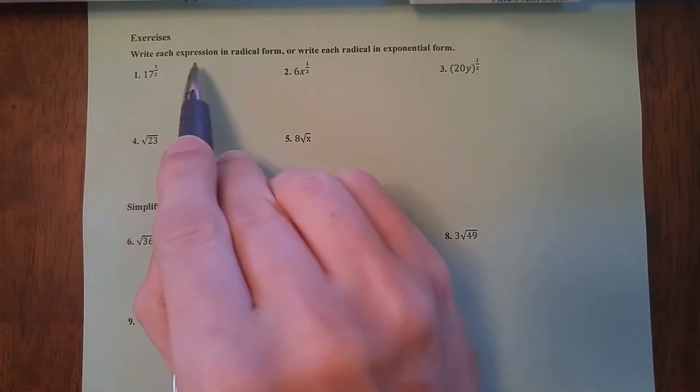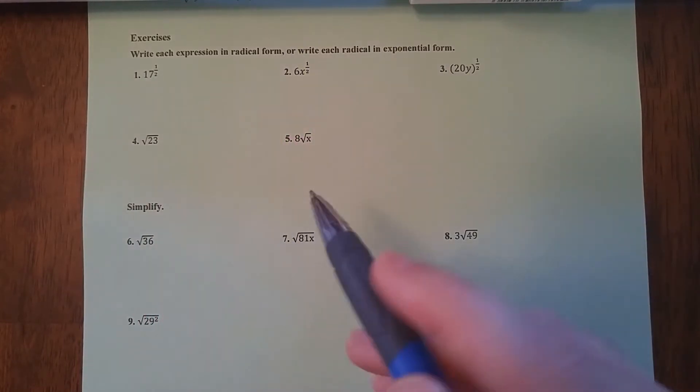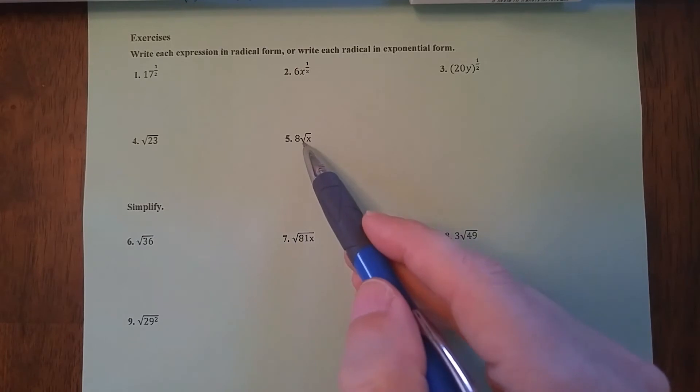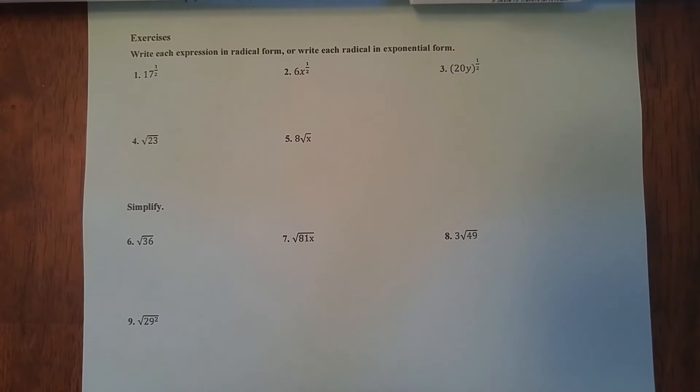So for these ones right here, it says write each expression in radical form or write each radical in exponential form. First of all, radicals are those symbols right there. Exponents, those little guys right there, which hopefully we know by now.